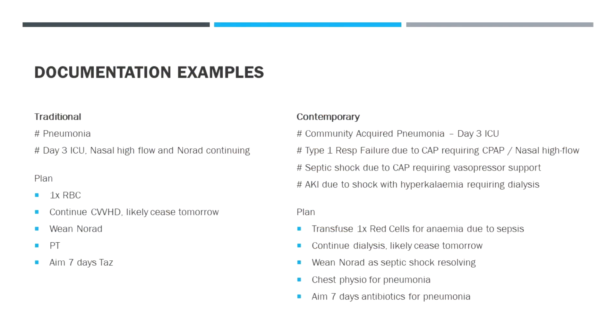You can also see with the plan — being relational and specific, linking the different interventions to the many different issues the patient is suffering from — is really important. So not just 'one times RBC,' which is open to interpretation, but 'transfusing red cells for anaemia due to sepsis' — really clear, couldn't improve more on that. 'Continued dialysis, likely to cease tomorrow.' And on the dialysis, we often commence it in ICU but often don't actually say what the indication was — most commonly it's going to be fluid overload and hyperkalaemia.